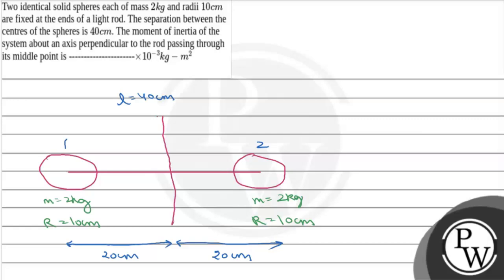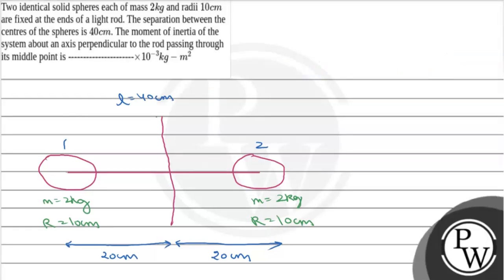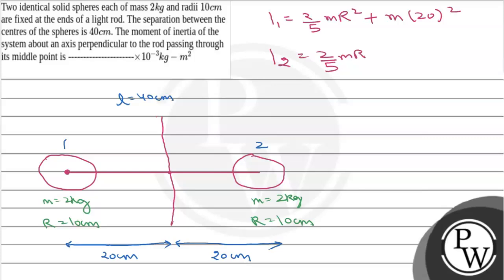Let sphere 1 and sphere 2 be at each end. The moment of inertia of a solid sphere about its own center is (2/5) m r squared. Applying the parallel axis theorem for each sphere — the axis is 20 cm from each sphere's center — we get: i1 = (2/5) m r squared + m (20)squared, and similarly i2 = (2/5) m r squared + m (20) squared.